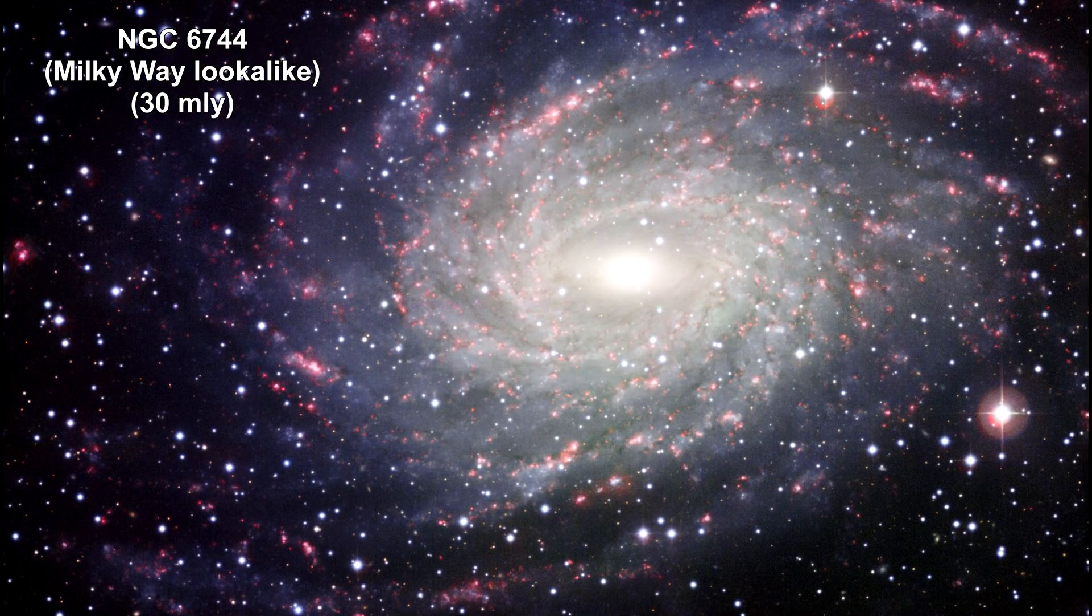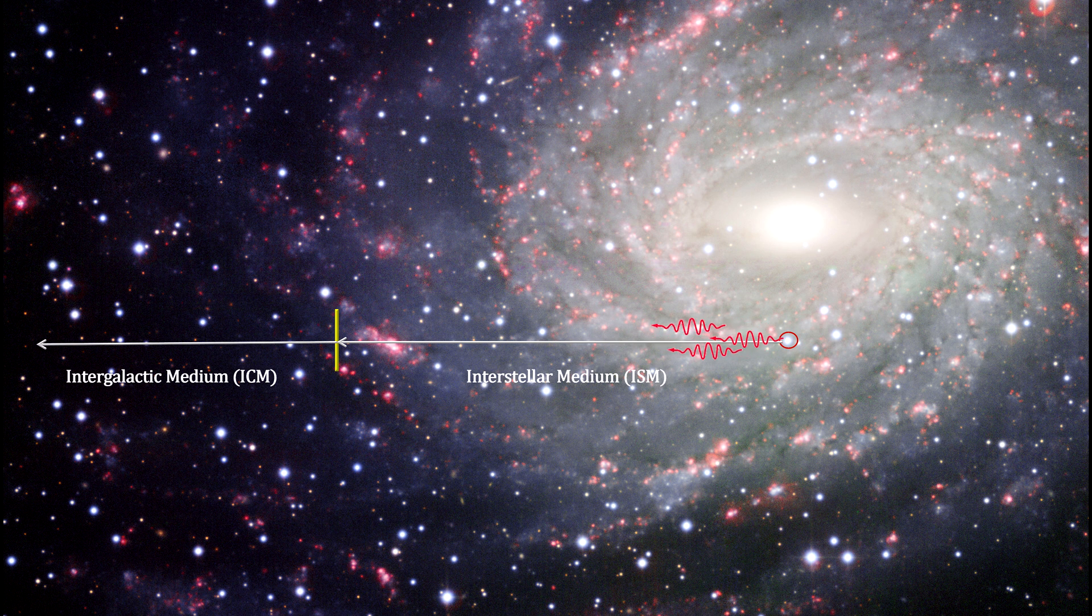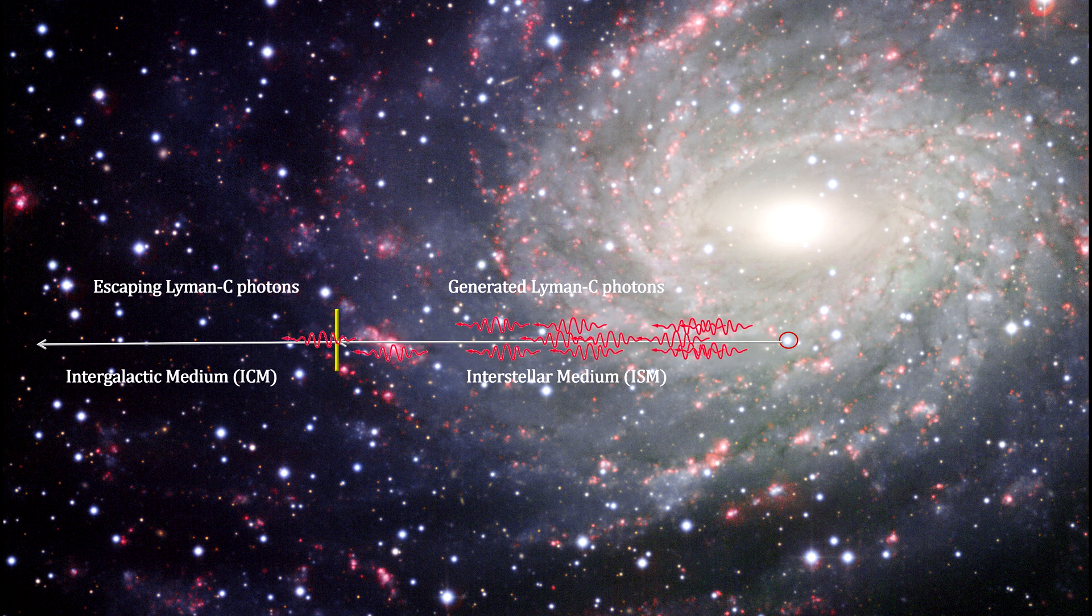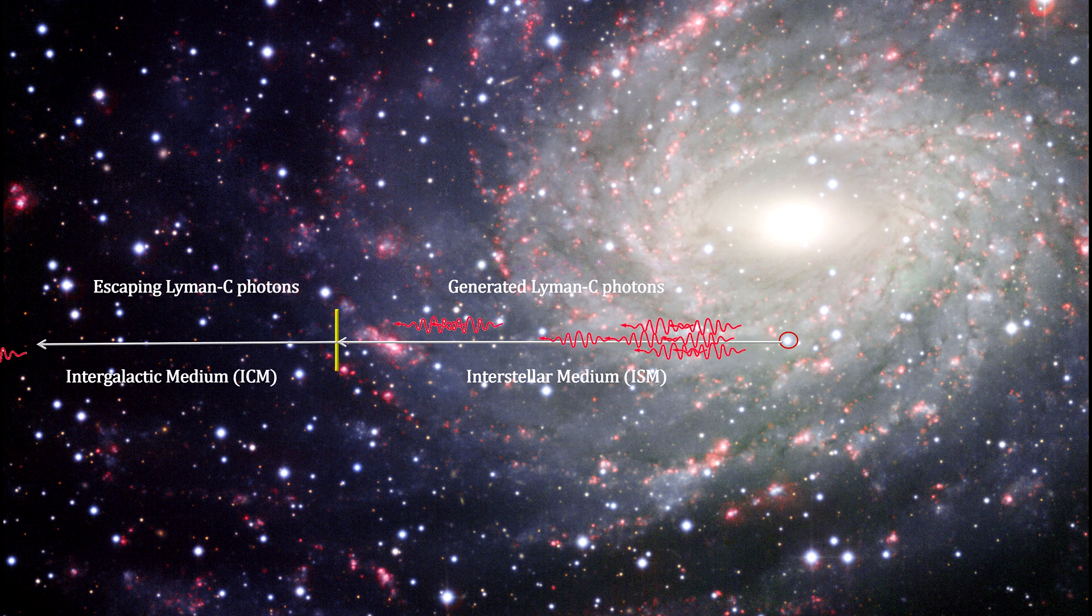All galaxies produce massive stars, which in turn produce Lyman C photons. But most stars are formed deep inside their galaxies, and the interstellar medium hydrogen gas inside these galaxies absorb nearly all the ionizing light, preventing it from escaping into the intergalactic medium, where it can re-ionize the hydrogen there.